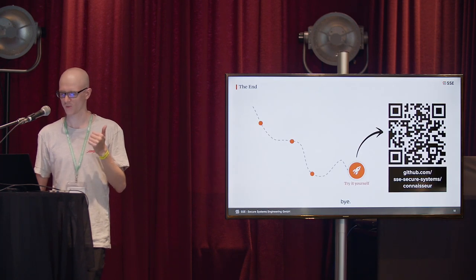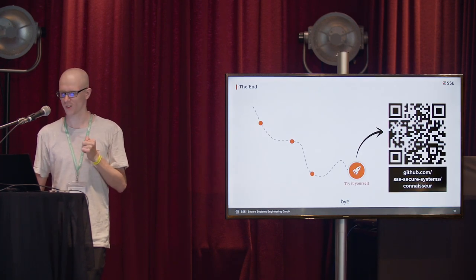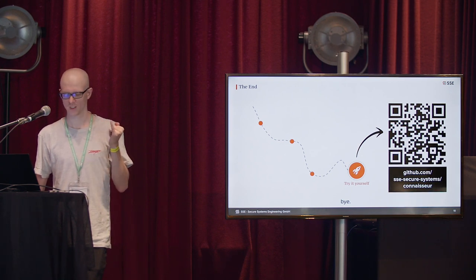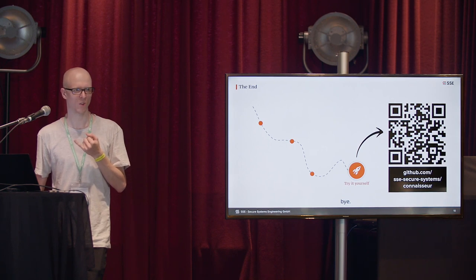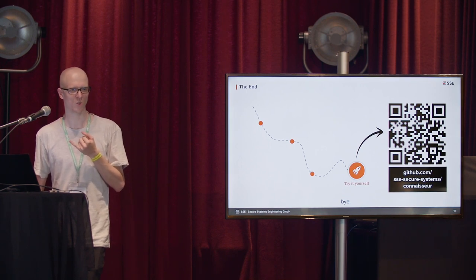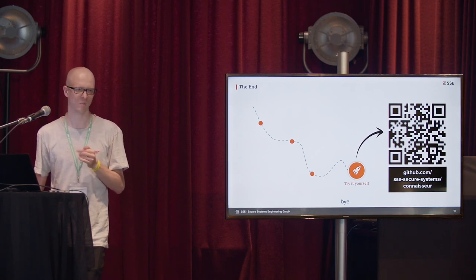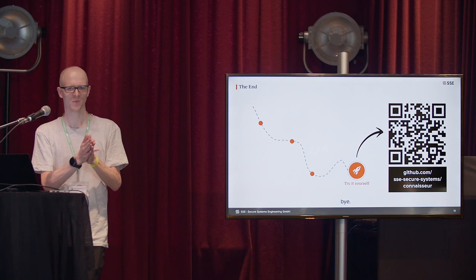If you want to join us, we're a community-driven project. You can really help us get more features into Connoisseur and just help support the whole ecosystem of image signatures — that'd be great. If you want to check out the Connoisseur GitHub page, there's a QR code. I hope some of you have learned a thing or two about image signatures and can start deploying your own signatures in your clusters and validate them. Thanks.